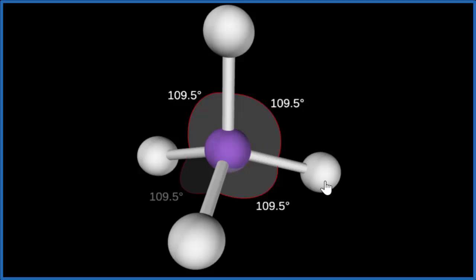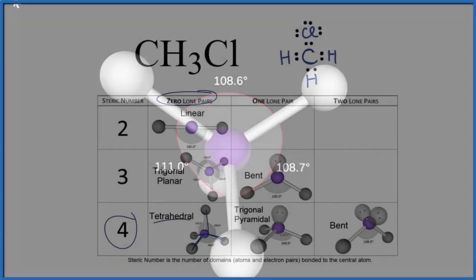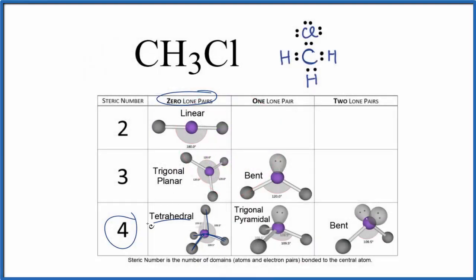Let's go back to our Lewis structure. So we said we have a tetrahedral molecular geometry for CH3Cl. In this case, the electron geometry will be the same as well, since we don't have any lone pairs on the central carbon here.